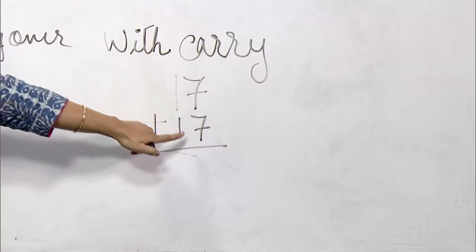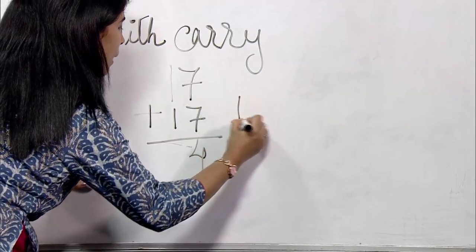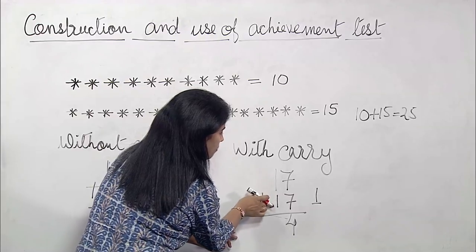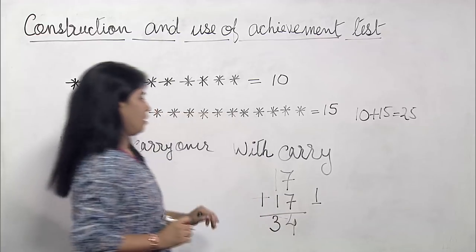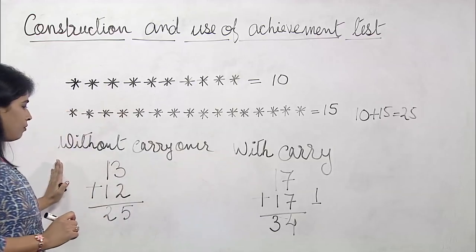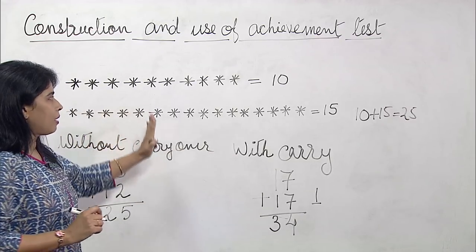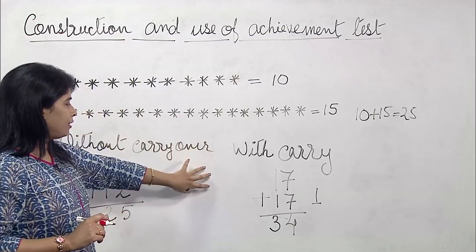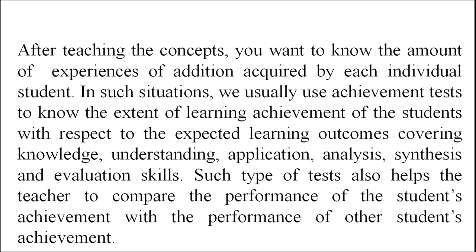For addition with carryover, take 17 plus 17: 7 plus 7 is 14, so 4 comes here and 1 is carried over. Then 1 plus 1 plus the carryover 1 makes 3, so 17 plus 17 equals 34. These are two different examples of addition with carryover and without carryover, which will help students clearly understand addition in different situations.